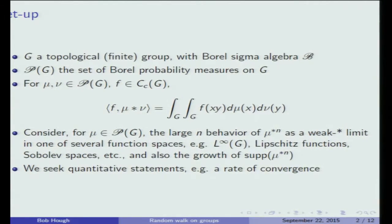P of G will be the probability measures on G. I'm considering convolution, so take a continuous function F and a couple measures and the integral is their convolution with F. For random walk on a group, we're interested in the behavior of repeated convolution of mu, usually tested in one of a number of function spaces, so either L-infinity functions or Lipschitz functions or Sobolev spaces.